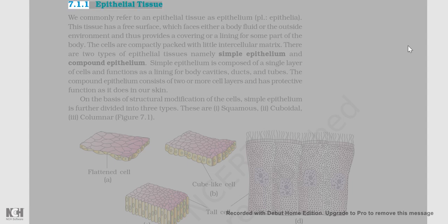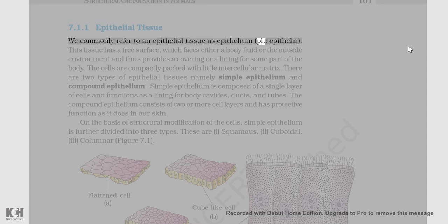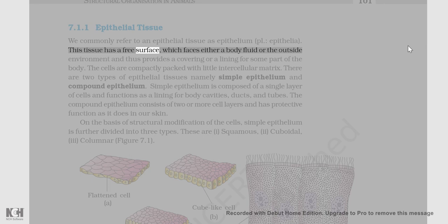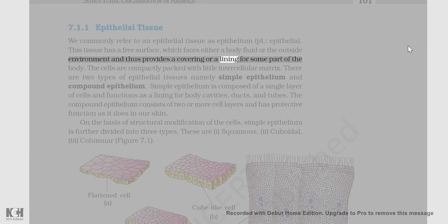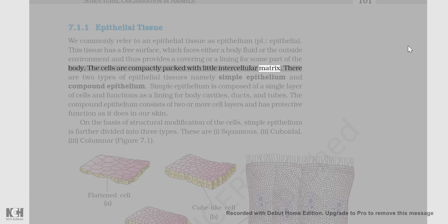We commonly refer to an epithelial tissue as epithelium (plural: epithelia). This tissue has a free surface which faces either a body fluid or the outside environment and thus provides a covering or a lining for some part of the body. The cells are compactly packed with little intercellular matrix.